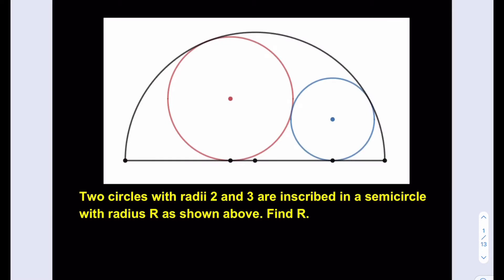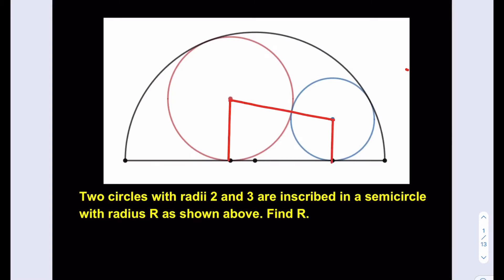Okay let's get started. We do have a semicircle and then two circles are inscribed in it. As usual we're going to be making some connections here. Let's go ahead and connect the centers of the circles first. Then we're going to drop the perpendiculars — one this way, another one this way. And then I'm going to go ahead and connect the centers of the circles with the semicircle, because that will be helpful when we set up our equations.